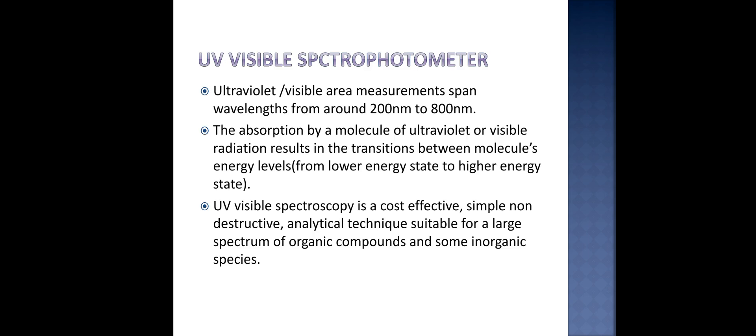UV visible spectrophotometer is a device that measures the ultraviolet or visible light that is transmitted from the sample. Ultraviolet visible area measurements span from 200 to 800 nanometers as we all know. The absorption by a molecule of ultraviolet or visible radiation results in the transition between molecule's energy levels from lower energy state to the higher energy state.